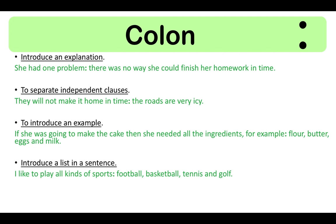Remember, when we have a list in a sentence we always use a comma to separate the items in the list. An example of a colon used before a direct quote is: 'She shouted: Get back to class.'